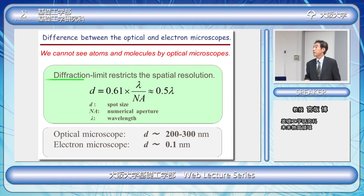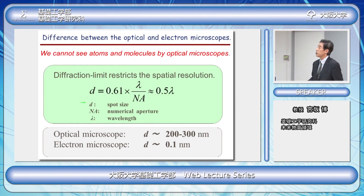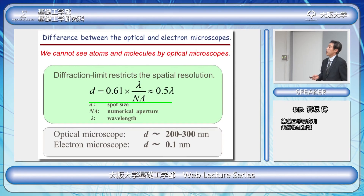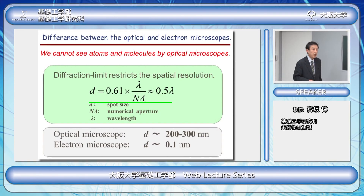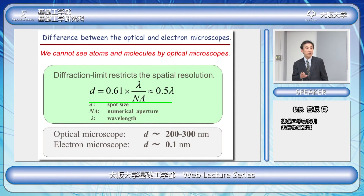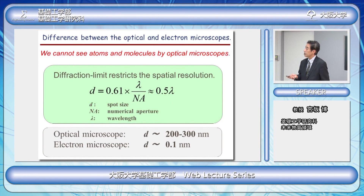But at the same time we know that we cannot see atoms and molecules by the optical microscope. This is because its diffraction limit restricts the spatial resolution. D in this equation is the spot size on the microscope. D is represented by this equation where lambda is the wavelength of the light used, and NA is the numerical aperture, which is a property of the lens. In optical microscopes we usually use visible light in the wavelength range of 400 to 700 nanometers, so the spot size is about 200 to 300 nanometers.